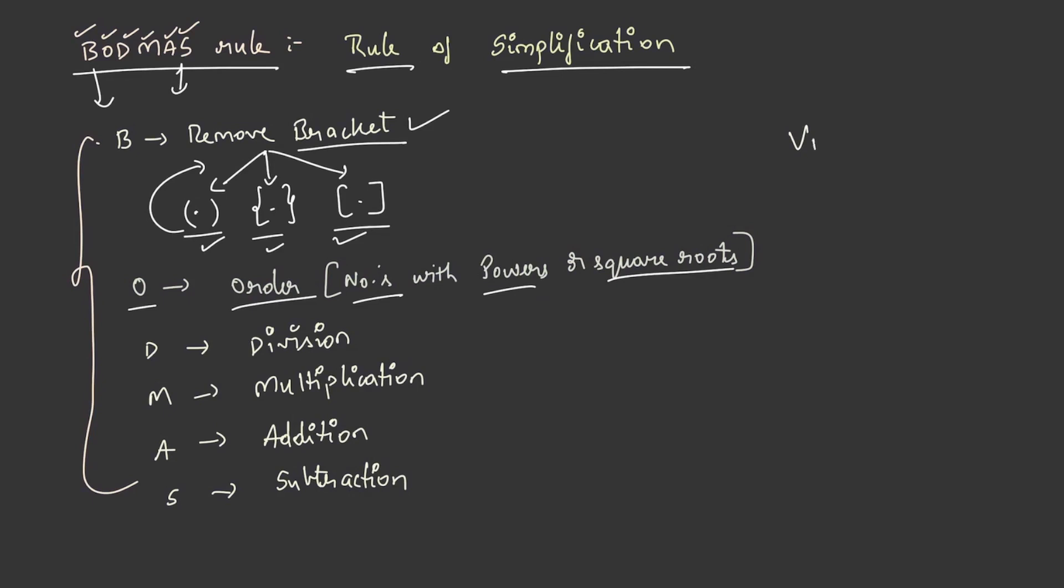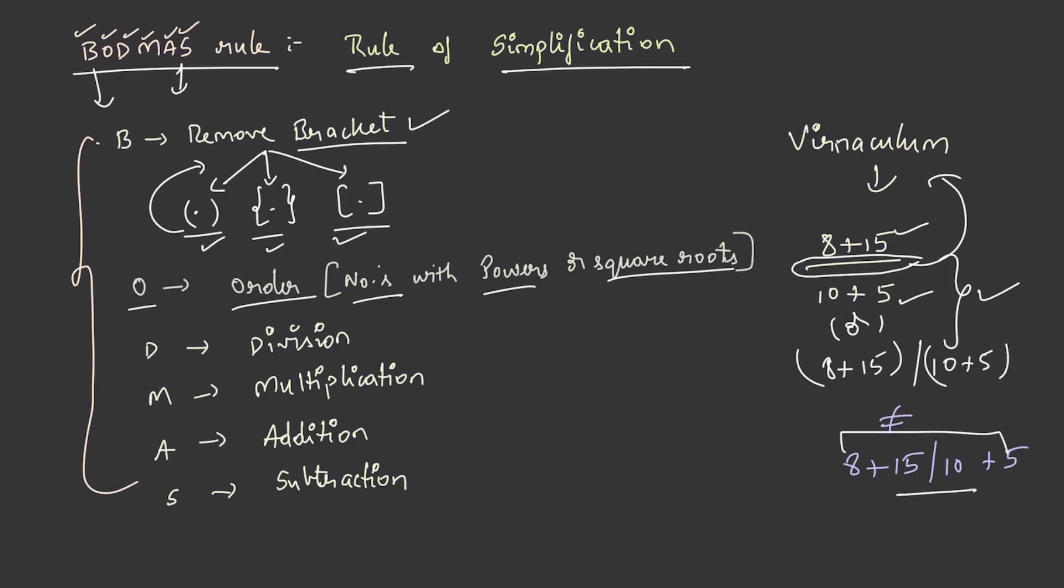Let us understand the small basic definition that is Vinaculum. What does this mean? I will explain it with an example. For suppose, let us take a fraction 8 plus 15 by 10 plus 5. Here we can observe a horizontal line which is separating the numerator and the denominator. This is known as Vinaculum. This, or 8 plus 15 by 10 plus 5, these two are one and the same. But these two are not equal to 8 plus 15 by 10 plus 5. In this case, we first solve 15 by 10 and then add these two. But here, we add the numerator and divide it by the denominator. That is the difference. Hope you had understood the concept of Vinaculum.